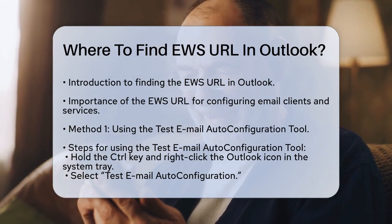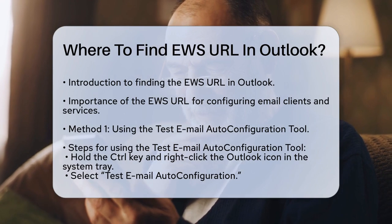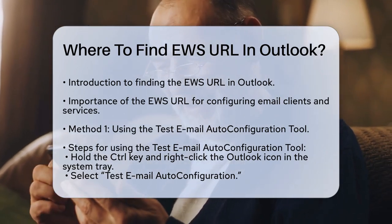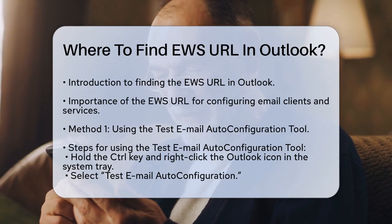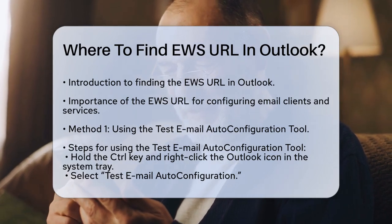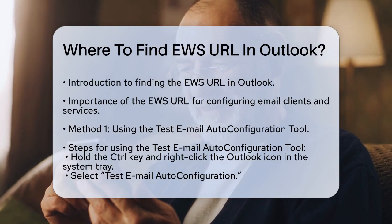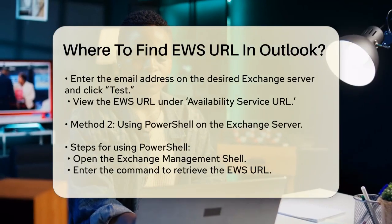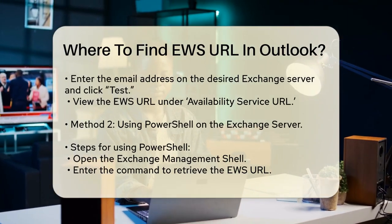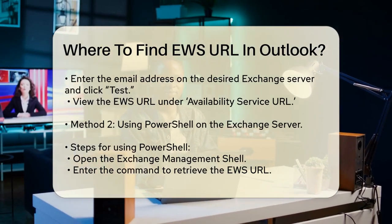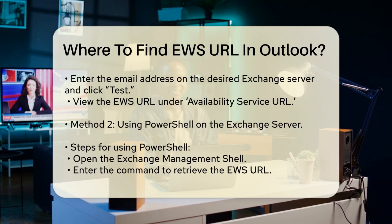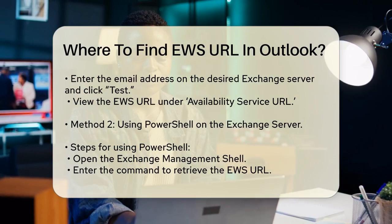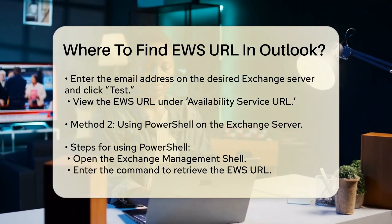Here are a few methods to find this URL using Outlook. Using the Test Email Autoconfiguration Tool: one of the easiest ways is to use the Test Email Autoconfiguration Tool in Outlook. Hold the Control key and right-click on the Outlook icon in the system tray. Select Test Email Autoconfiguration from the menu. Enter an email address that is located on the desired Exchange server and click Test. The tool will perform the autoconfiguration and display the EWS URL under the Availability Service URL section.